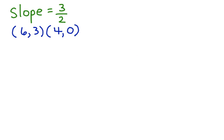The slope of the line is 3/2, and we know the line passes through the points (6, 3) and (4, 0). Now let's look at the next step. Instead of trying to find the y-intercept, you're going to use the point-slope formula.